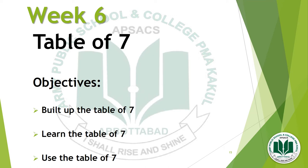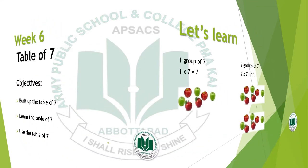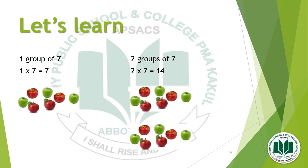Now we start the topic of week 6, which is the table of 7. The objectives are: build up the table of 7, learn the table of 7, and use the table of 7. We build the multiplication table of 7 based on the idea of '7 more than.' You can make 7 circles or use objects in groups of 7. For example, 7 ones are 7 — that is 1 group of 7; 2 sevens are 14 — that is 2 groups of 7. In this way we build up the full table of 7.